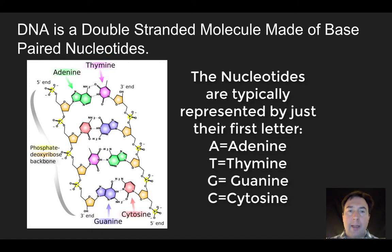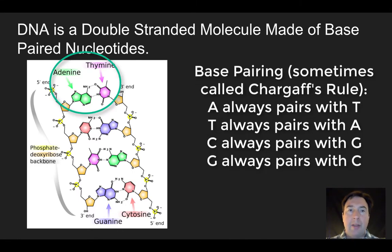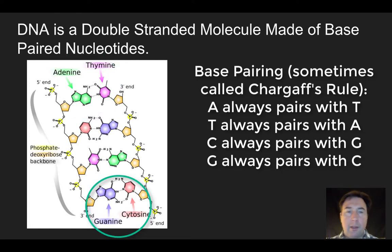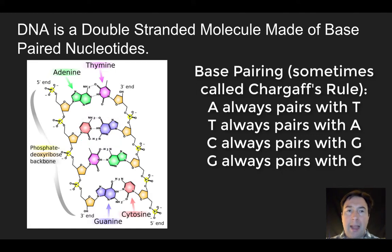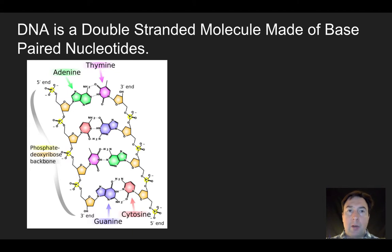Each one of these nucleotides has a complementary pair. The green adenines are always paired with the purple thymines, and the blue guanines are always connected to the reddish cytosines. So A's always pair with T's, and C's always pair with G's. That's the idea of nucleotide base pairings.